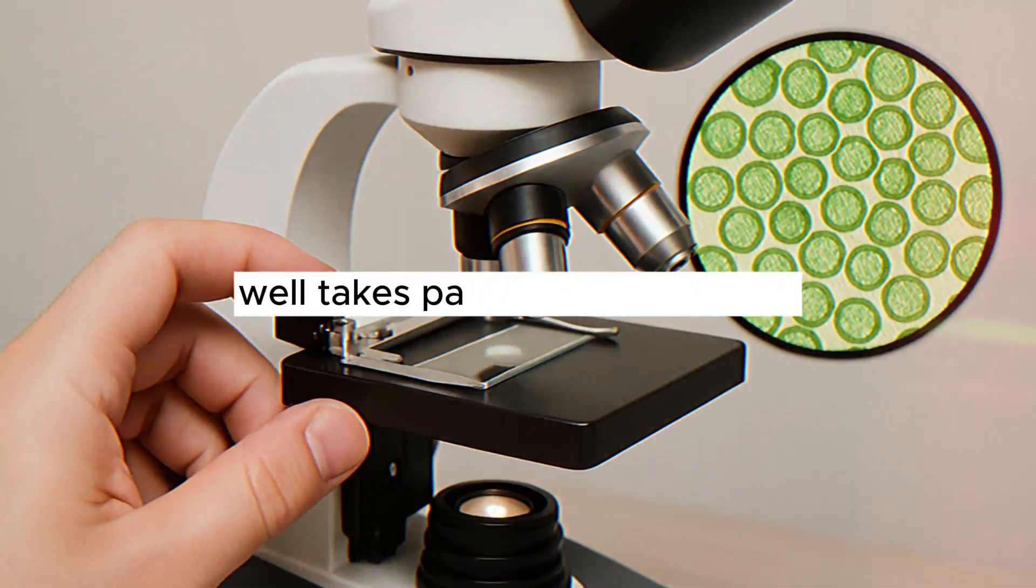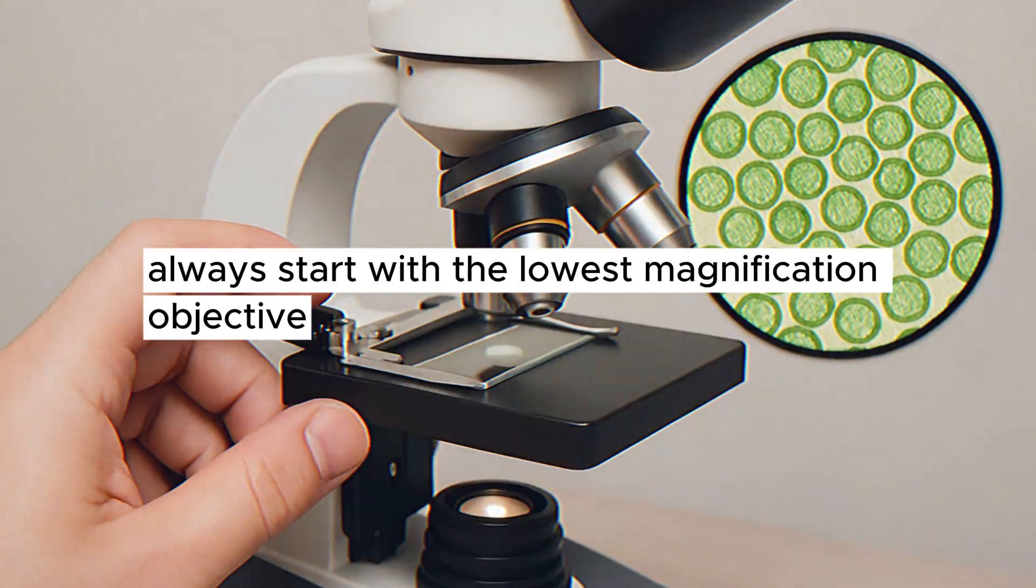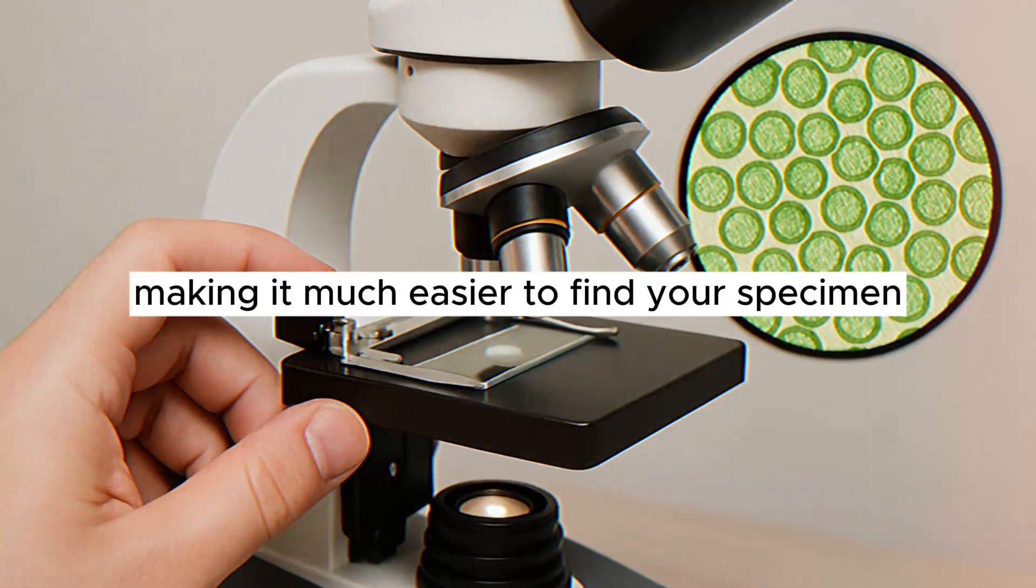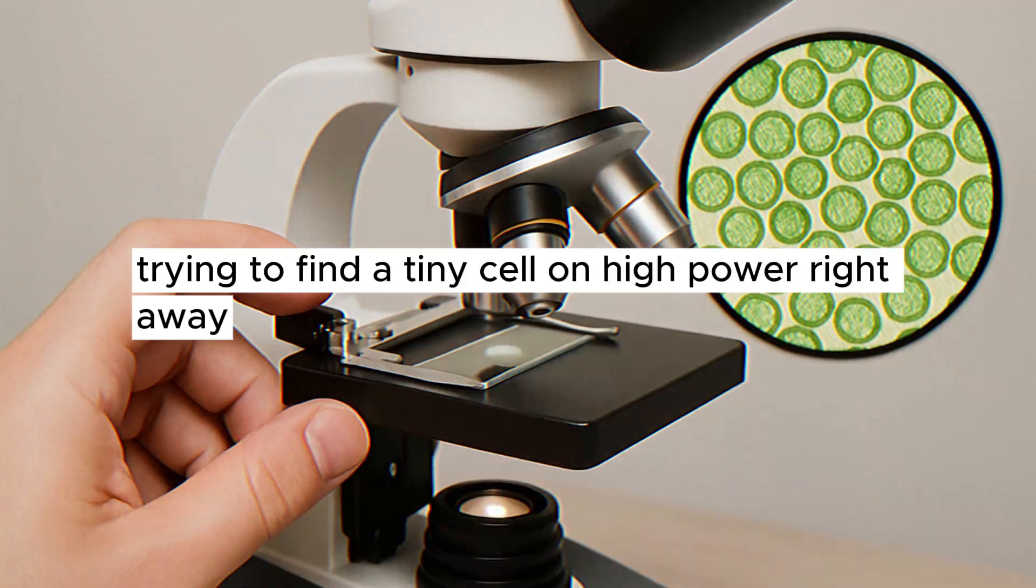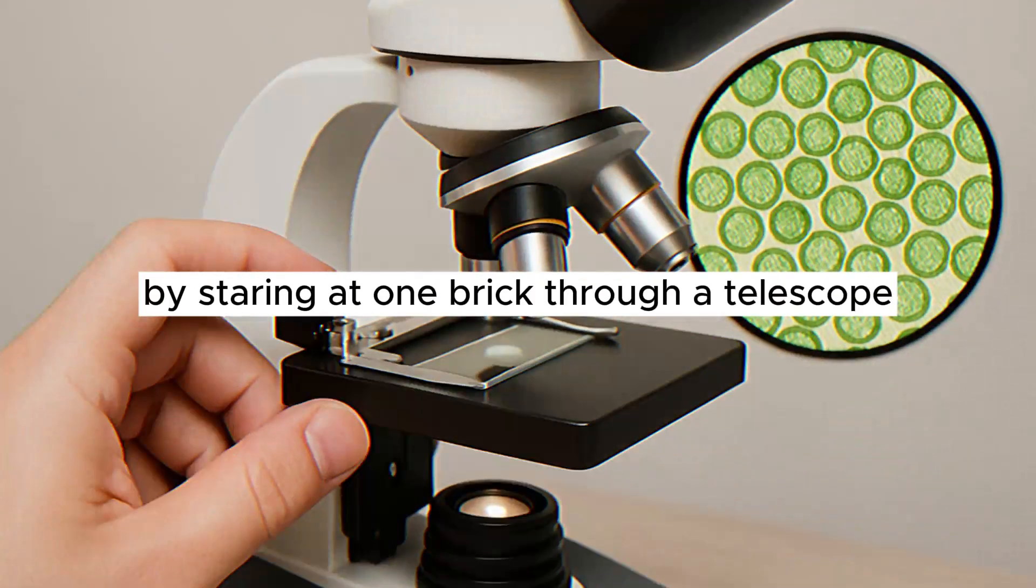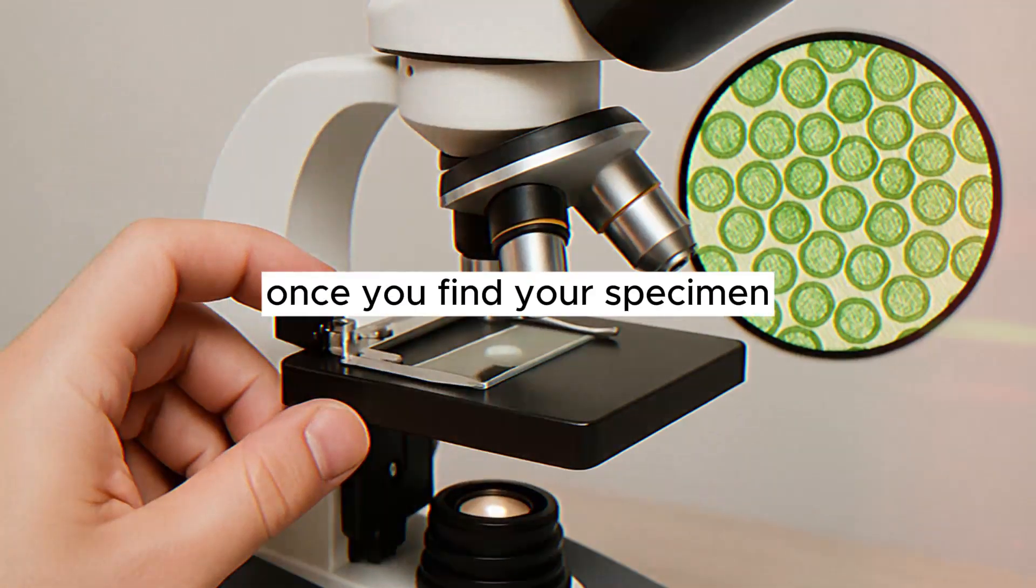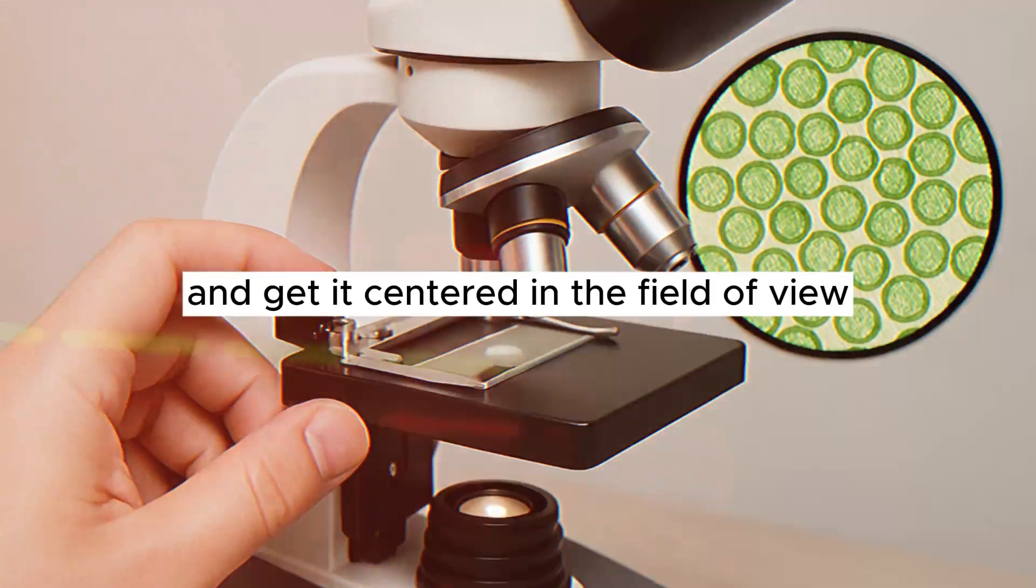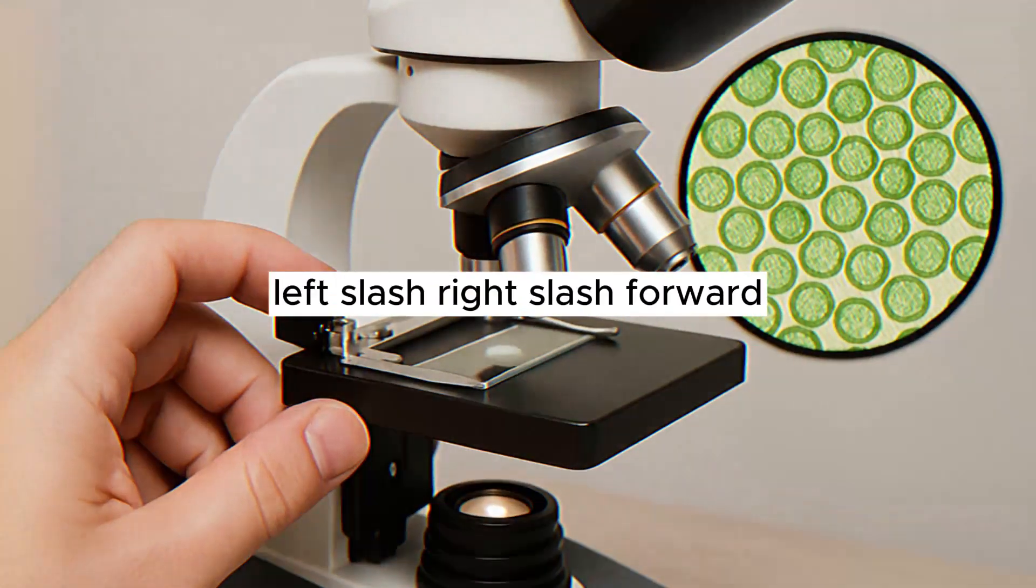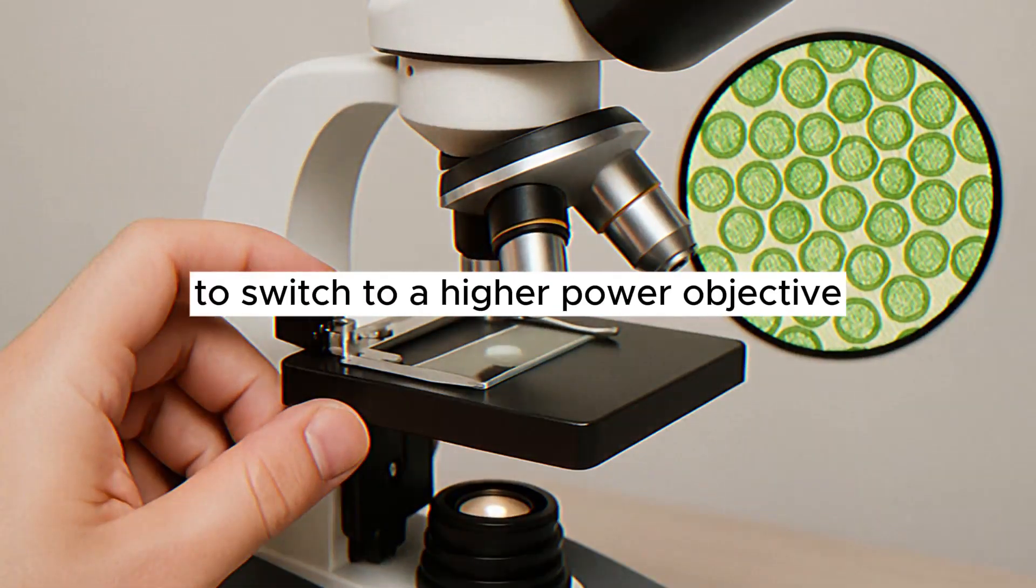Learning to use a microscope well takes patience and practice. Always start with the lowest magnification objective. This gives you the widest field of view, making it much easier to find your specimen. Trying to find a tiny cell on high power right away is like trying to find a specific house by staring at one brick through a telescope. Frustrating and nearly impossible. Once you find your specimen and get it centered in the field of view using the stage controls, those knobs that move the slide left, right, forward, back, then you can carefully rotate the turret to switch to a higher power objective.